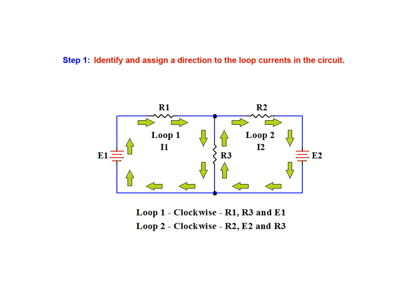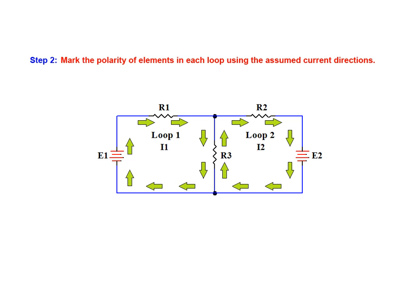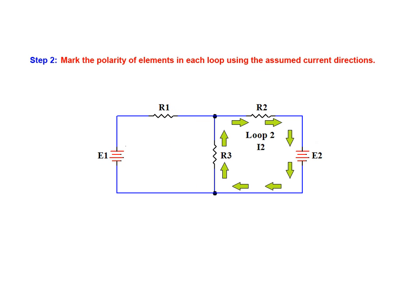With the loop currents identified, we move on to step 2 of the process. For this part of the analysis, we mark the polarity of elements in each loop in terms of the assumed current directions we've arbitrarily assigned. Starting with loop 1, we mark the known polarity of voltage source E1. We then assign polarity to the remaining elements in loop 1 according to the I1 current direction. For electron flow, current enters the negative end of an element and exits through the positive end. We start the loop 2 assignment with the known polarity of voltage source E2, then assign polarity to the remaining elements in loop 2 in terms of current I2.